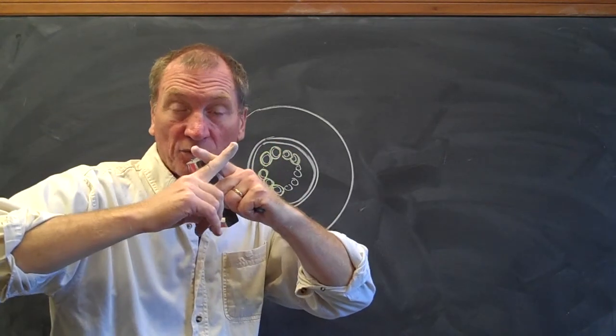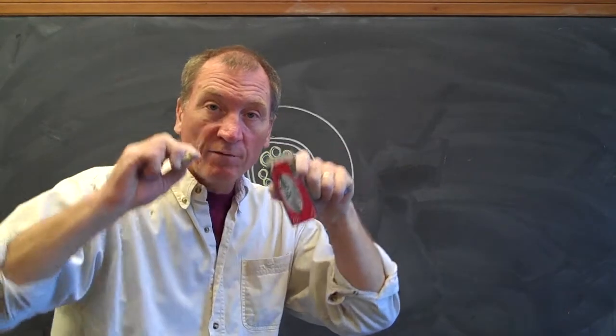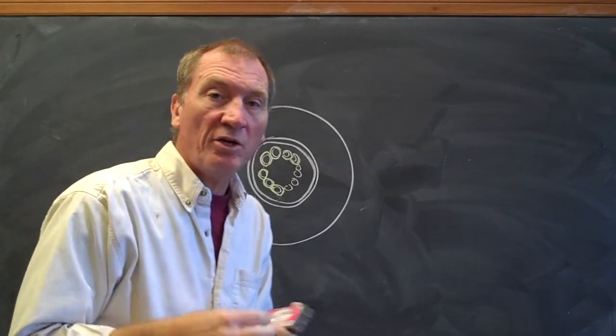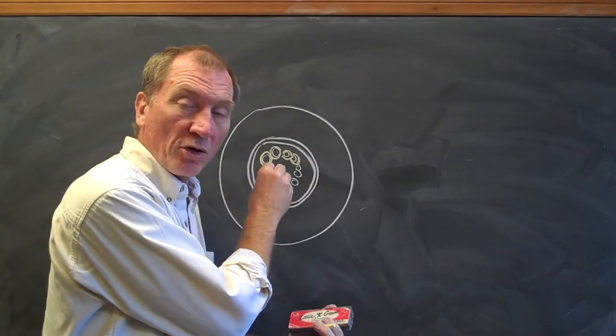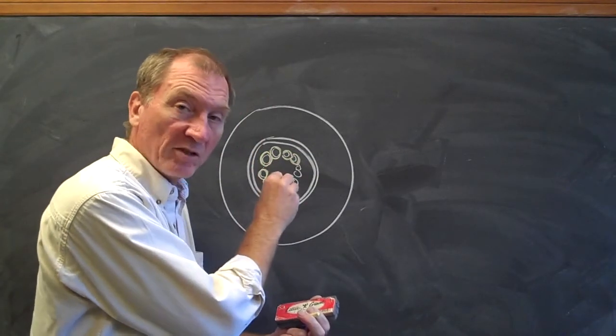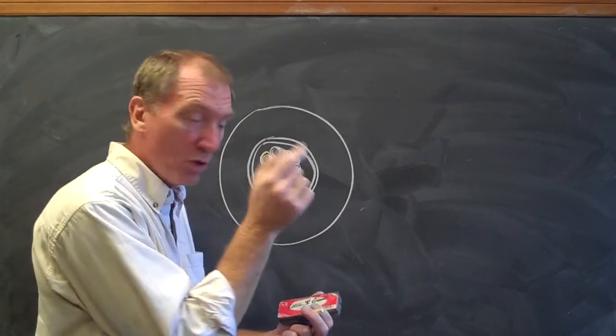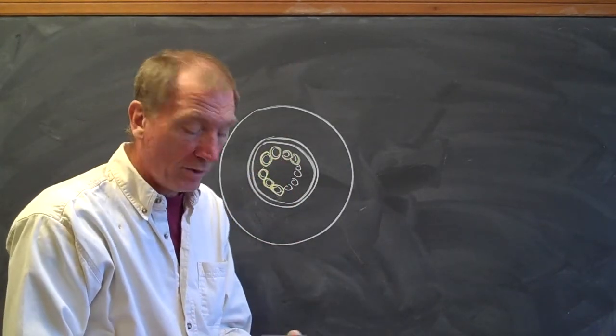So instead of having an X with the xylem in the middle and phloem being in the lobes of the X, instead you have the xylem as discrete bundles in a circular arrangement around the inside of the root, and then you have phloem around it.